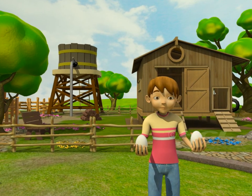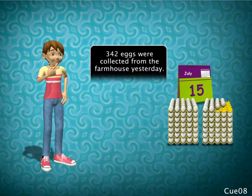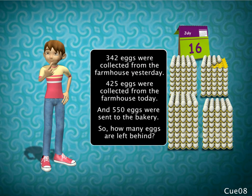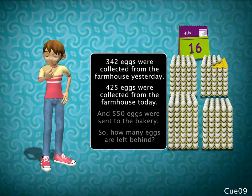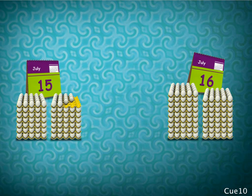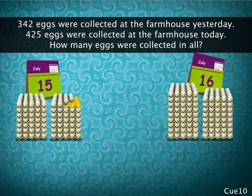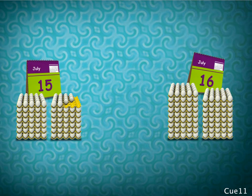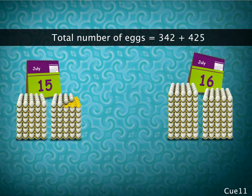550 eggs were sent to the bakery, so how many eggs are left behind? Well, relax Sam, let us look at the problem again. Let's divide the problem into two parts. Let's first find out how many eggs were collected in all. To find the total number of eggs collected, we use addition — we have to add 342 and 425.